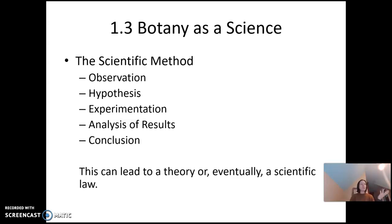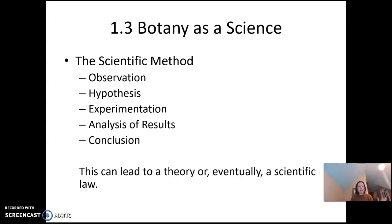We might notice that the leaves are changing color — it's fall. A good scientist would form an explanation: not just the question 'why,' but a hypothesis would be an explanation. So the leaves are changing color because it's getting colder. And then a scientist would experiment on that. A fun way to experiment on something like that would be to set up greenhouses.